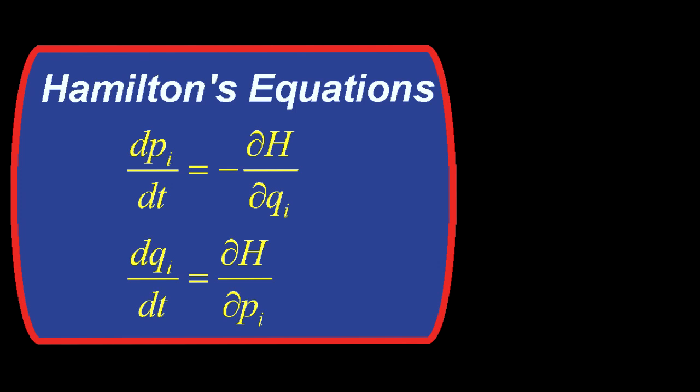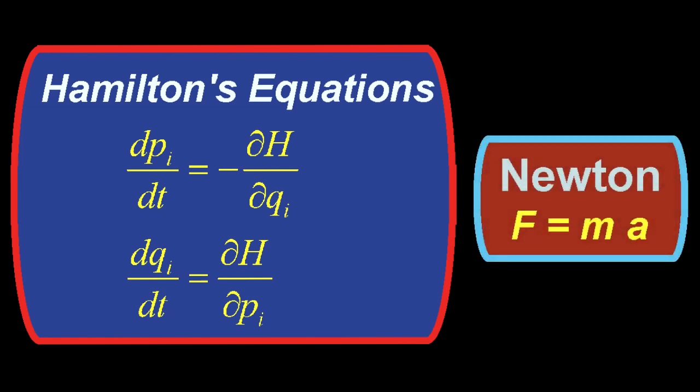If the q's are regular Cartesian coordinates, x, y, and z, and the p's are linear momenta in the x, y, and z directions, then Hamilton's method reduces to Newton's method, and the equations are equivalent to f equals ma.